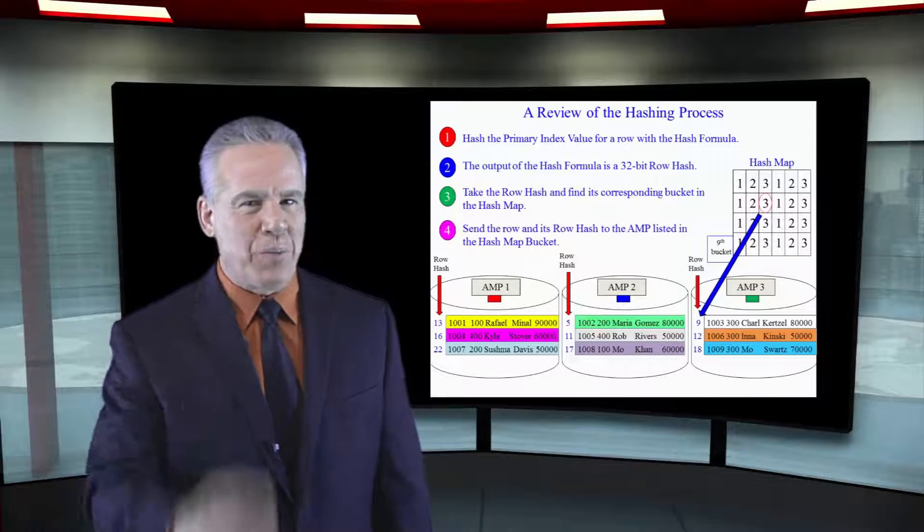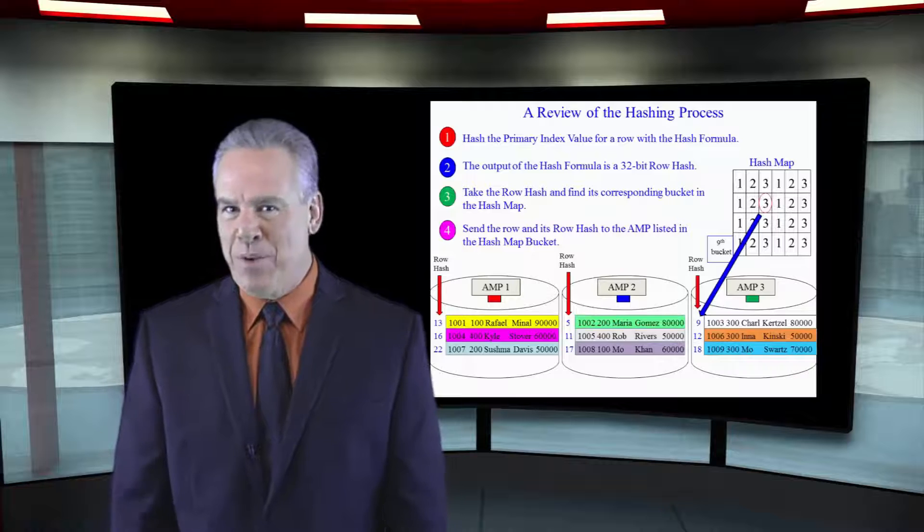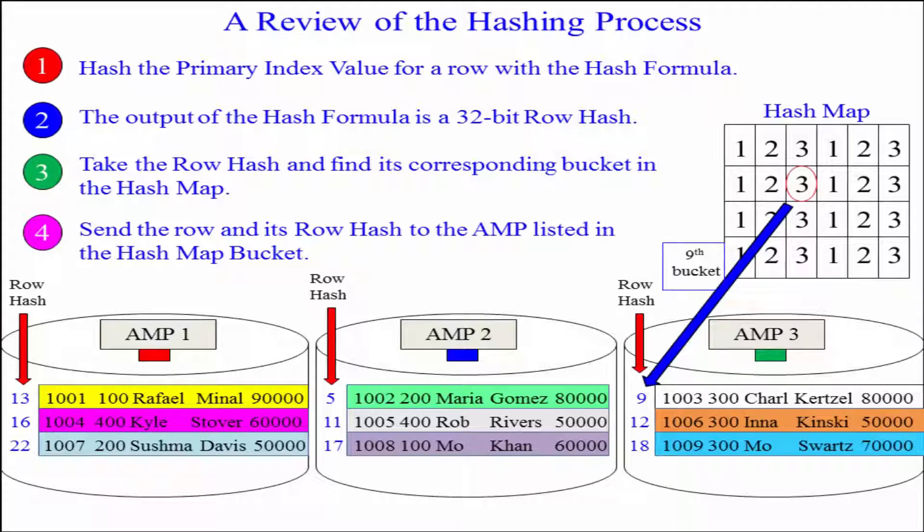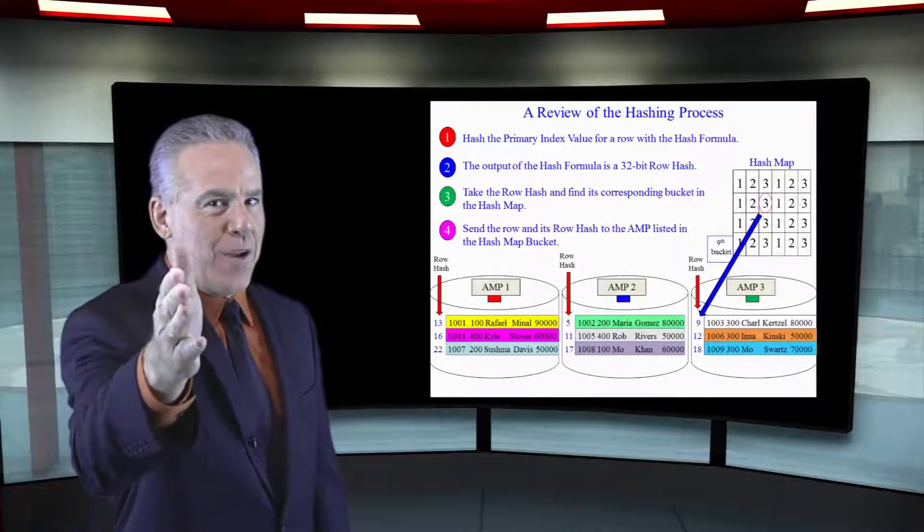You see, we had a unique primary index on this table, amp now, and all of the employees are laid out with perfect distribution. Notice the rows, and notice in front of every row is the row hash. That's going to be part of our row ID. Stay with me.